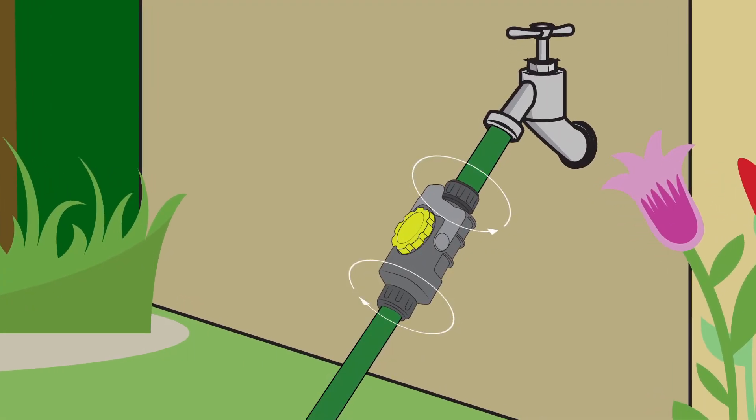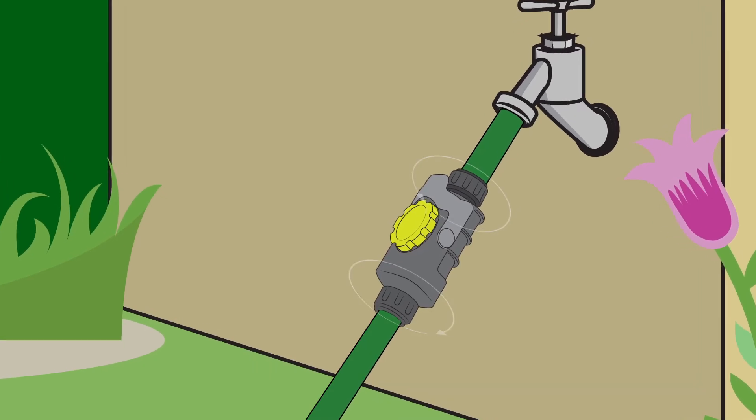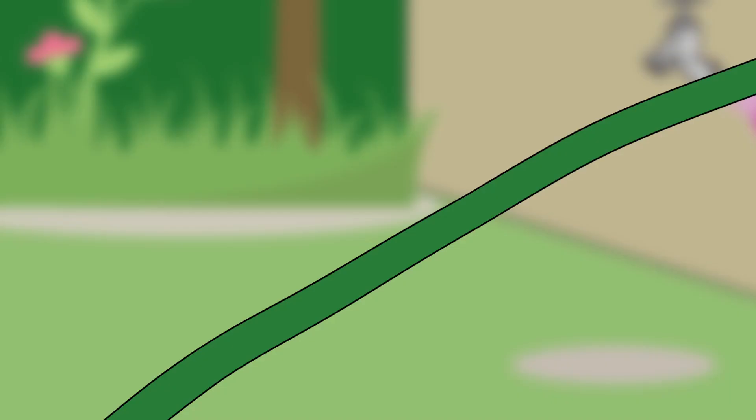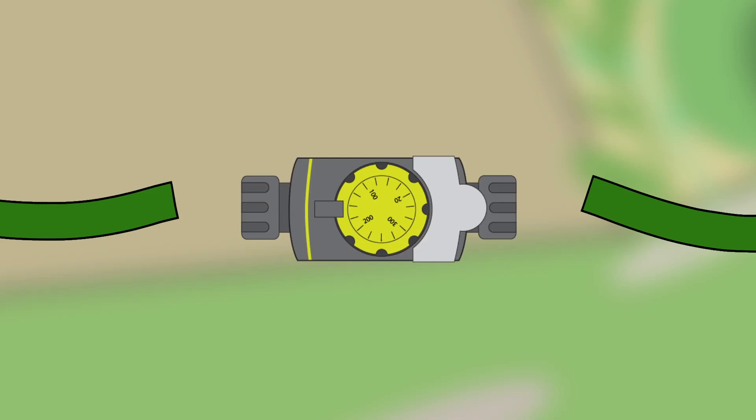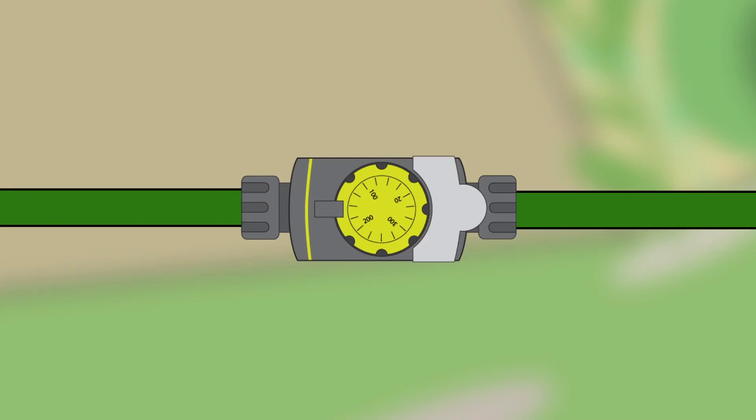The device attaches to the hose with ease using a standard spin lock clamp on each end. The user simply cuts the hose and inserts the hose meter in place.